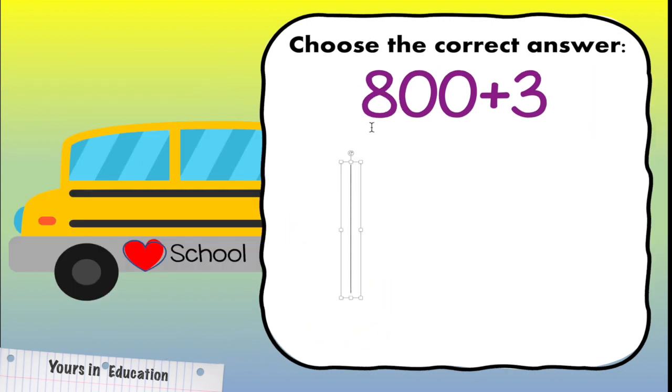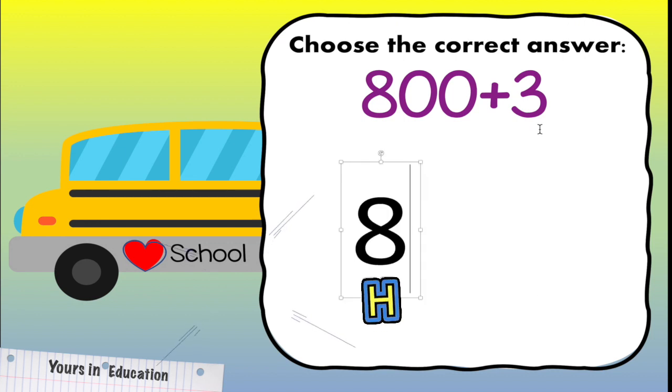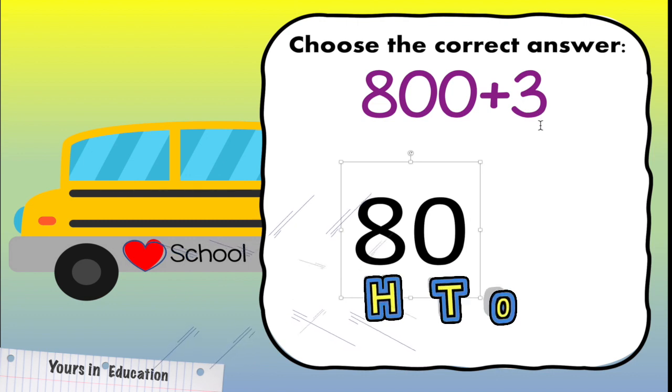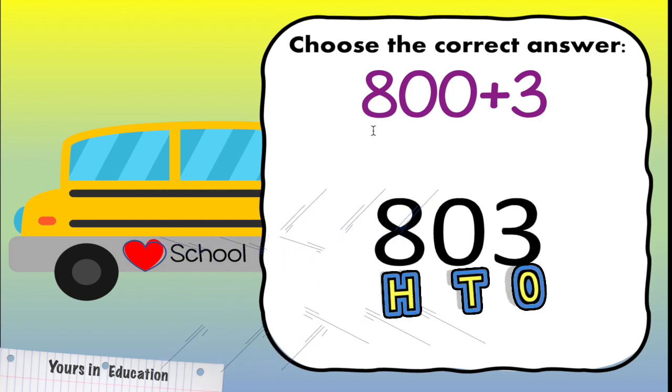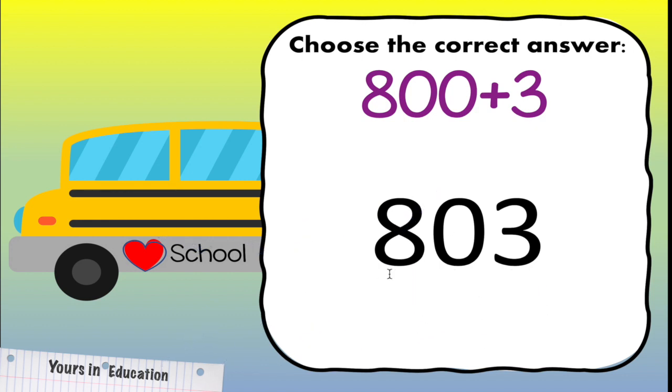I want you to take very close attention to this problem. We have 800 and 3. So many kids will write like this. But is this correct? No, we have an 8 on the hundreds place. Do we have any tens? No we don't, so we write a 0, and then on the ones place we have a 3, which means that 803 is the expanded form of 803.